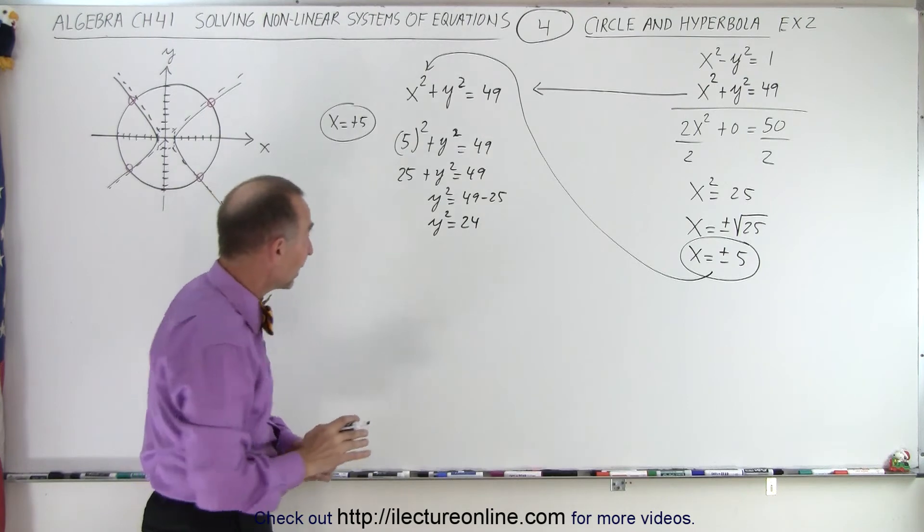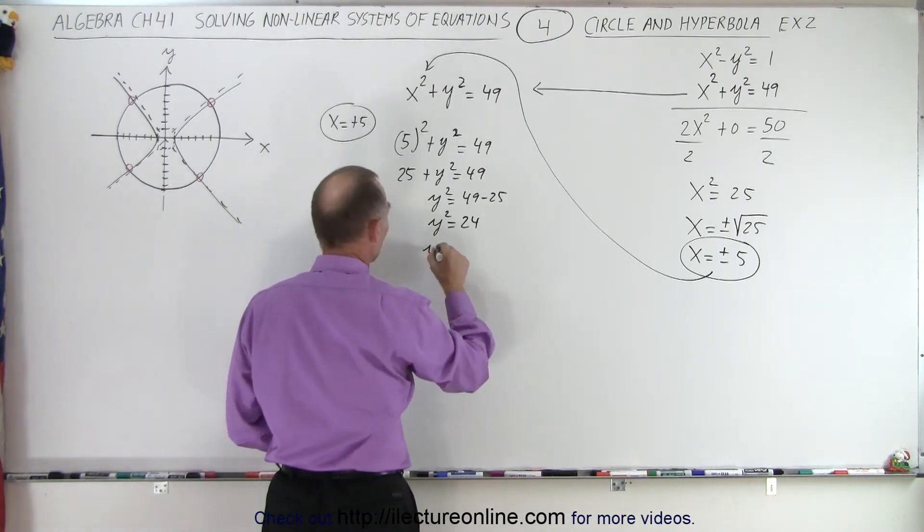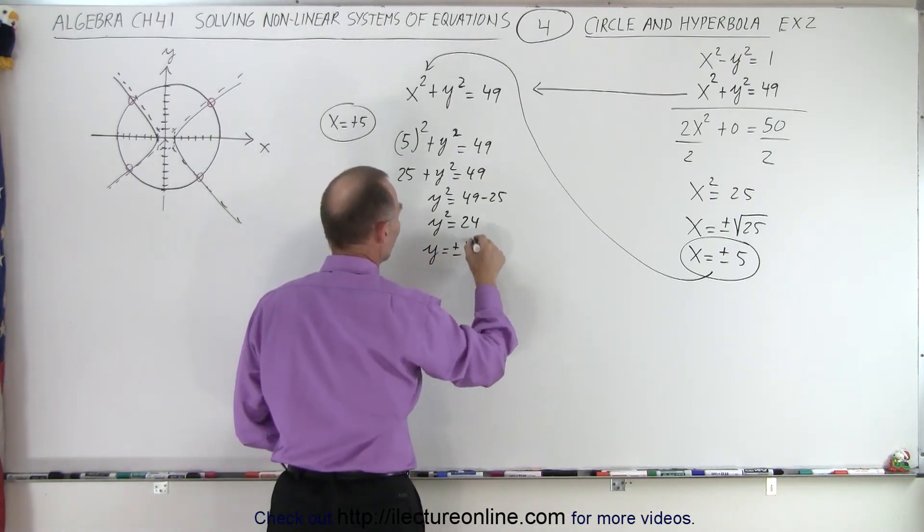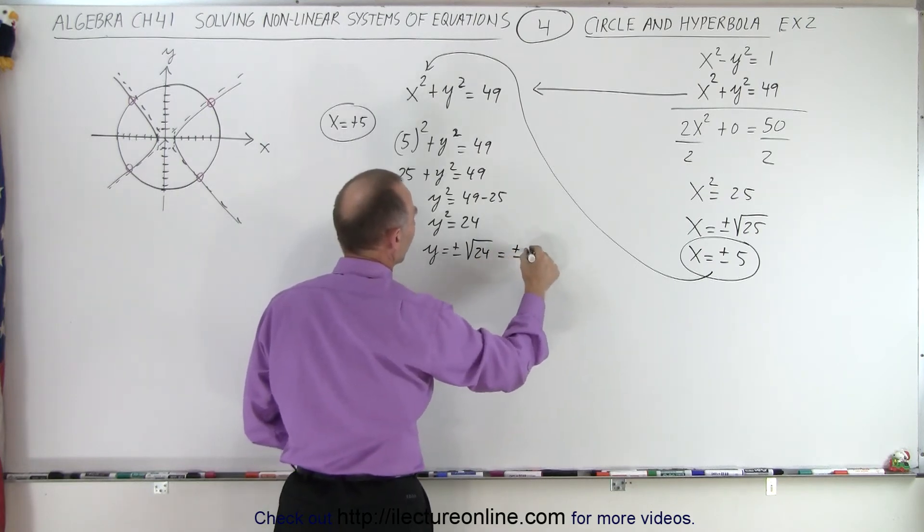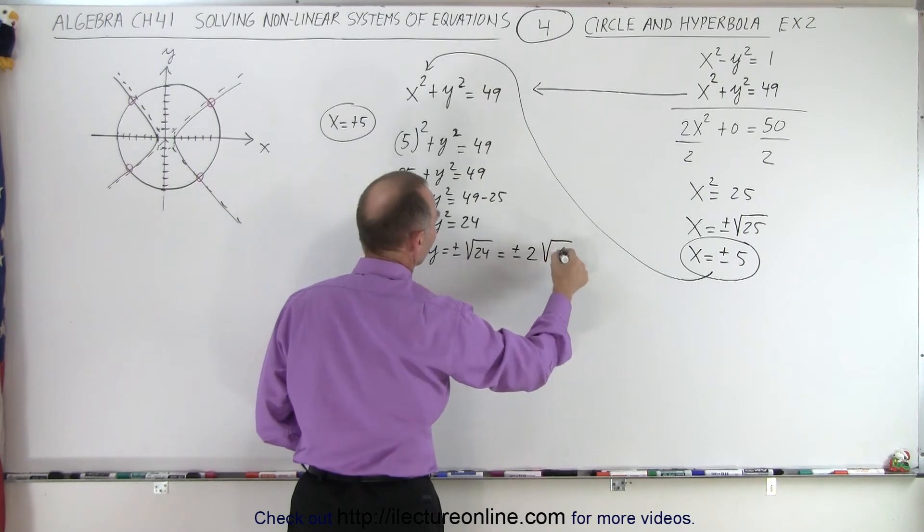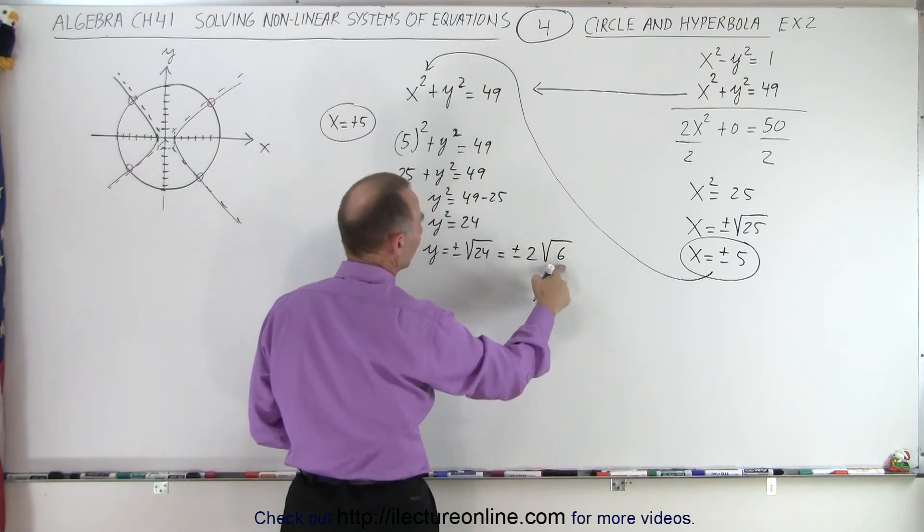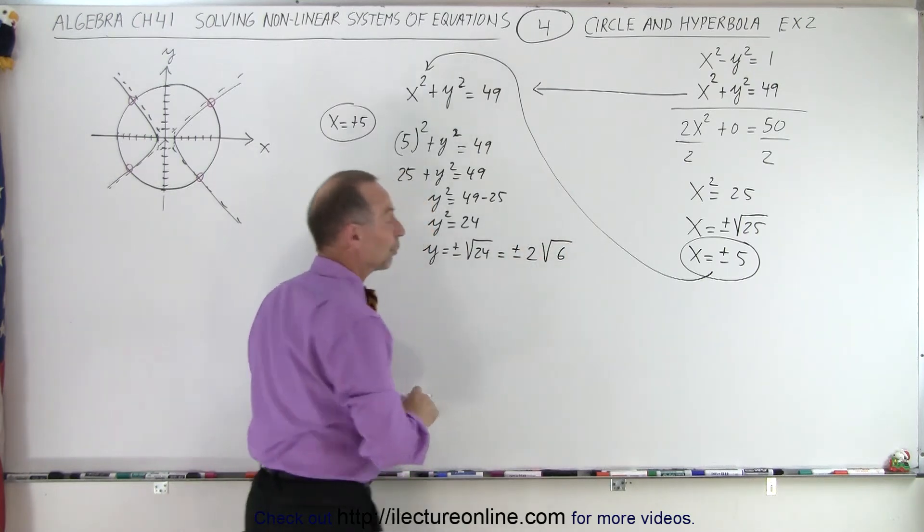Which means we can now take the square root of both sides. So we can say y is equal to plus or minus the square root of 24. We can factor out a 4, which is equal to plus or minus 2 times the square root of 6. Because 4 times 6 is 24. And I can take the square root of 4, which becomes 2.